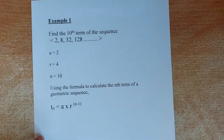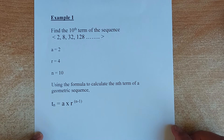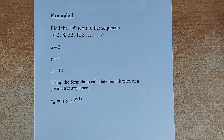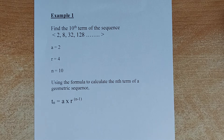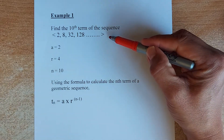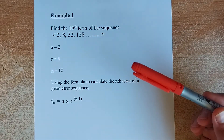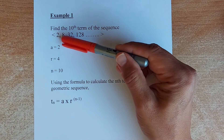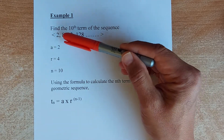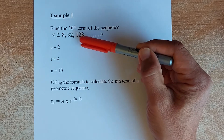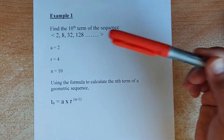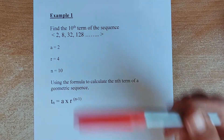The first example: find the tenth term of the sequence 2, 8, 32, 128, and so forth. You are going to find the tenth term somewhere down the road here. To do that, you are going to use the formula. The first thing you do is calculate the three unknowns. A is the first term, so in this case A is 2. R is the common ratio — you can take 8 divided by 2, which gives you 4. You can also take 32 divided by 8, it gives you 4. Or 128 divided by 32, also 4. Since they asked for the tenth term, N equals 10.